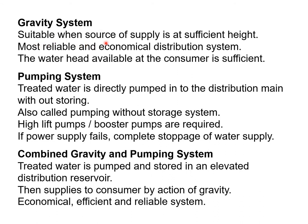The gravity system is suitable when the source of supply is at sufficient height — it is the most reliable and economical system, and adequate water head is available at the consumer end by virtue of gravity. In the pumping system, treated water is directly pumped into the distribution main without storage; however, if power fails, water supply stops completely. In the combined gravity and pumping system, treated water is pumped and stored in an elevated reservoir or overhead tank, and supply to the customer is ensured by gravity — making it the most economical, efficient, and reliable system.